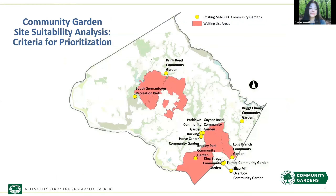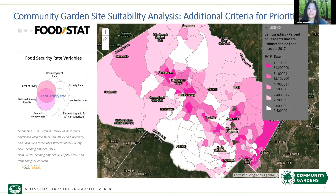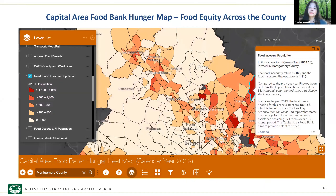We want to have eyes on our parks. This slide illustrates another criteria we use to prioritize candidate sites: the waiting list areas. Areas shown in pale red represent areas with waiting lists for our community gardens, and the yellow dots represent the location of our existing community gardens. We also investigated food and security data to further prioritize sites, to ensure we were distributing resources in an accessible way. The darker areas on the maps represent the highest concentration of residents estimated to be food insecure.